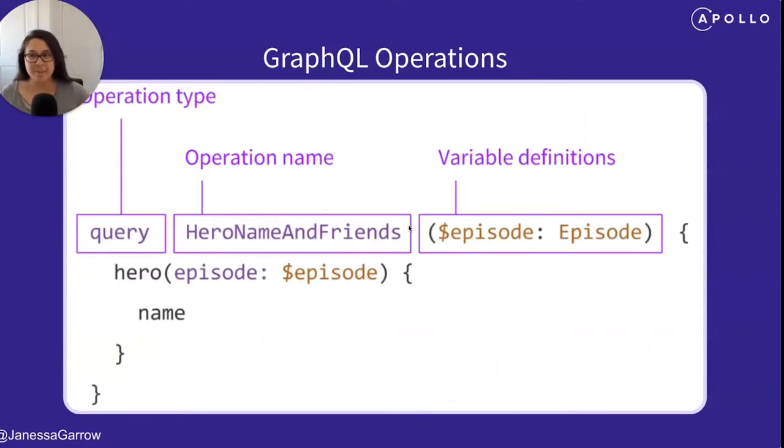Once we have the schema, we can make requests. To tell the API what data we want and what we want to do with it, we use what's called GraphQL operations. In GraphQL, there are two different types, queries and mutations. For fetching data, we use a query. And to make any data changes, we use a mutation.